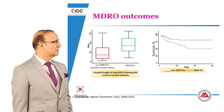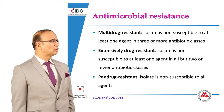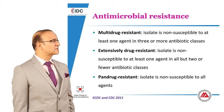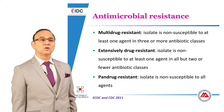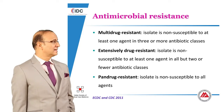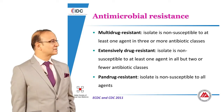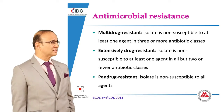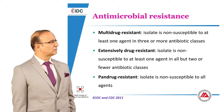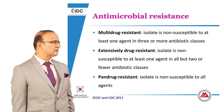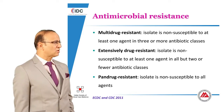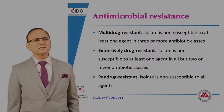Before going ahead, it is important to describe the terminology. When do you call MDR, XDR, or pan-drug resistance? Multi-drug resistance is when an isolate is non-susceptible to at least one agent in three or more antibiotic classes. Extensive drug resistance is when an isolate is non-susceptible to at least one agent in all but two or fewer antibiotic classes. And pan-drug resistance is when an isolate is non-susceptible to all agents. This terminology is important.